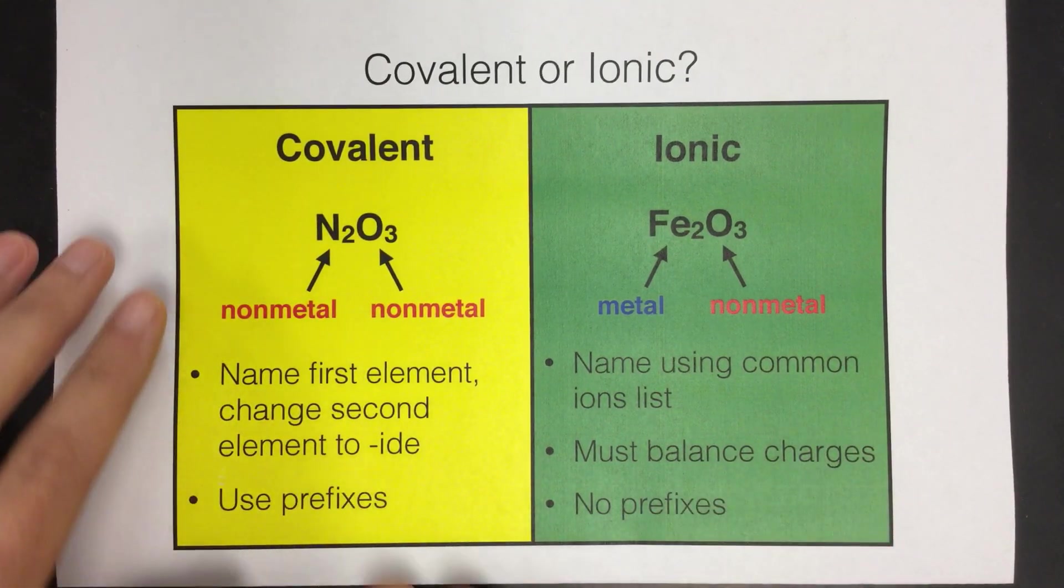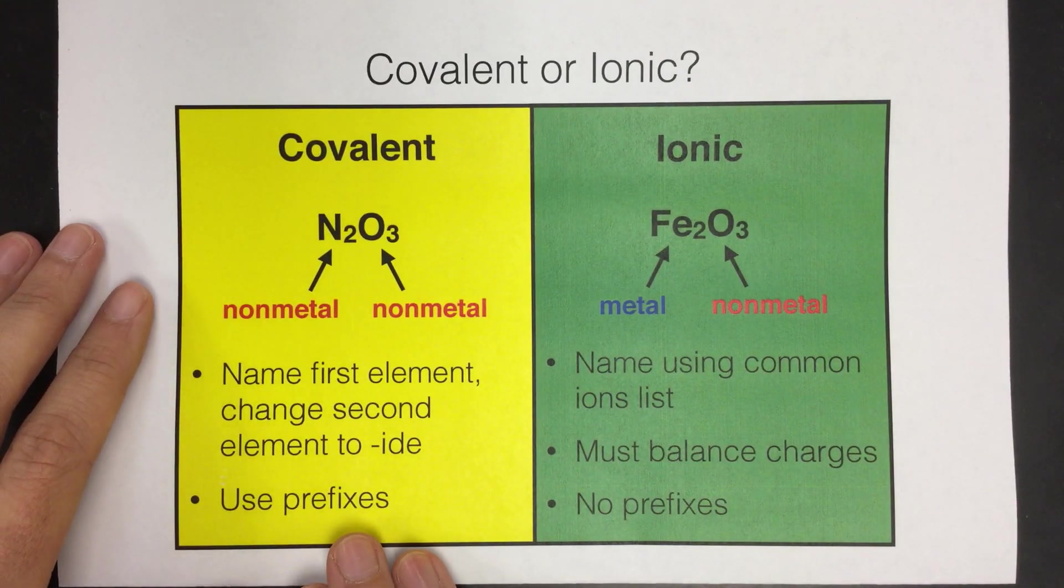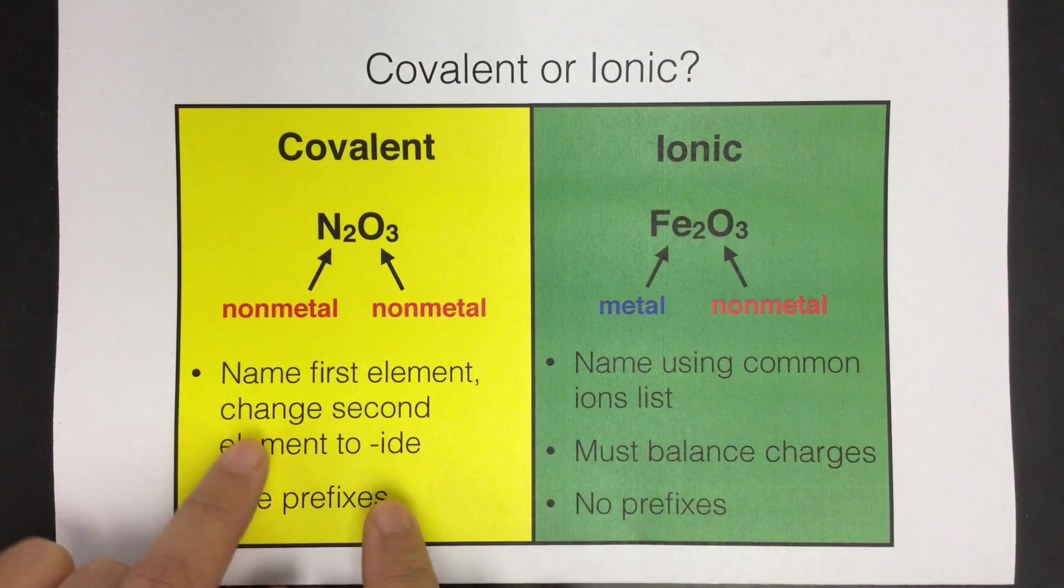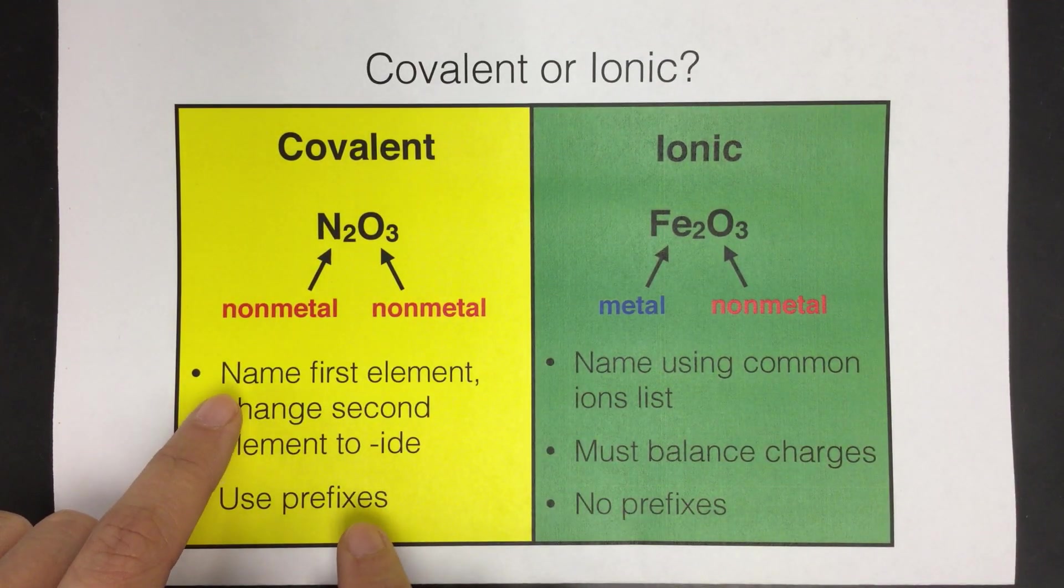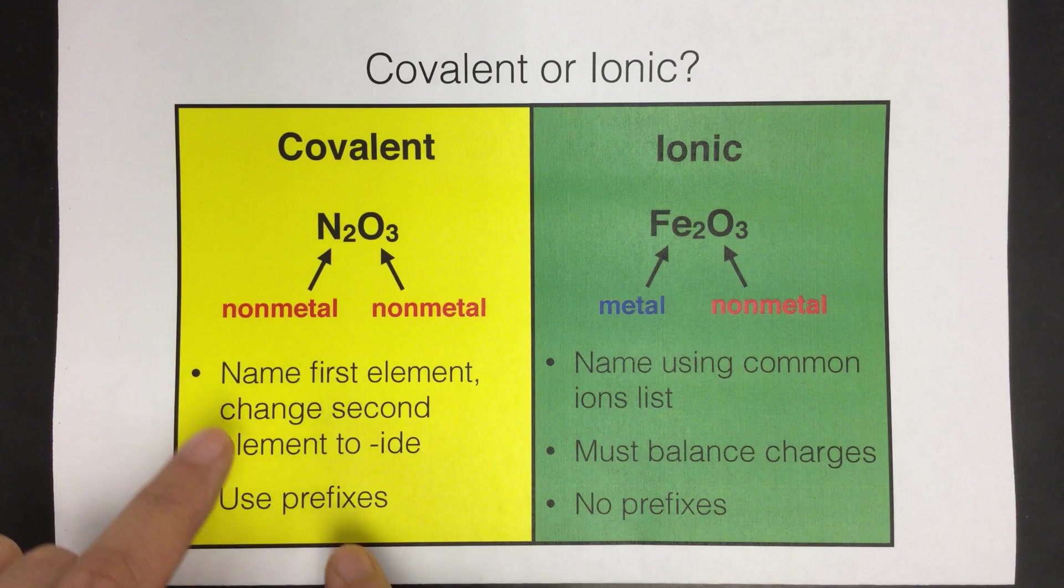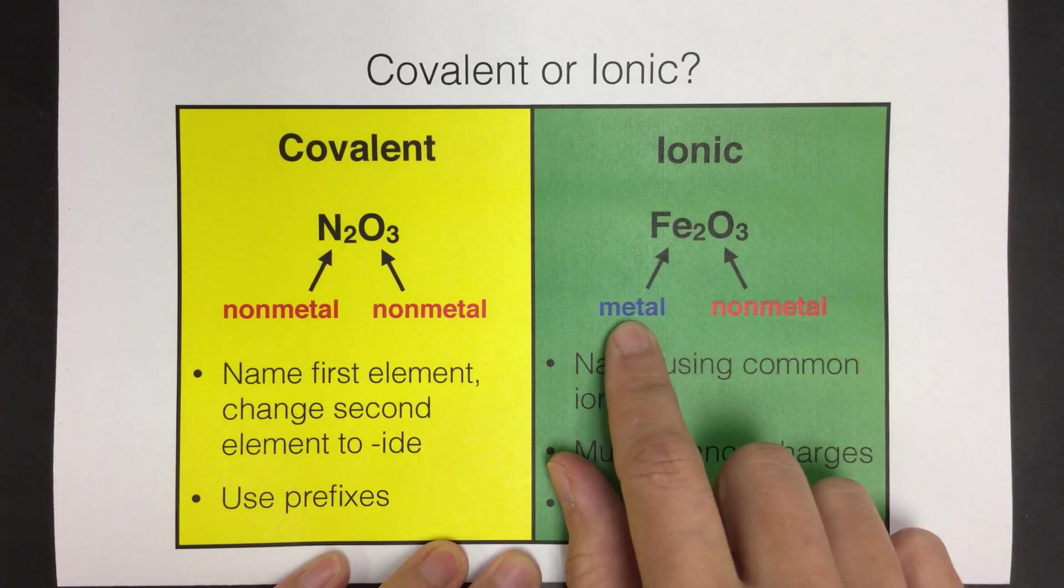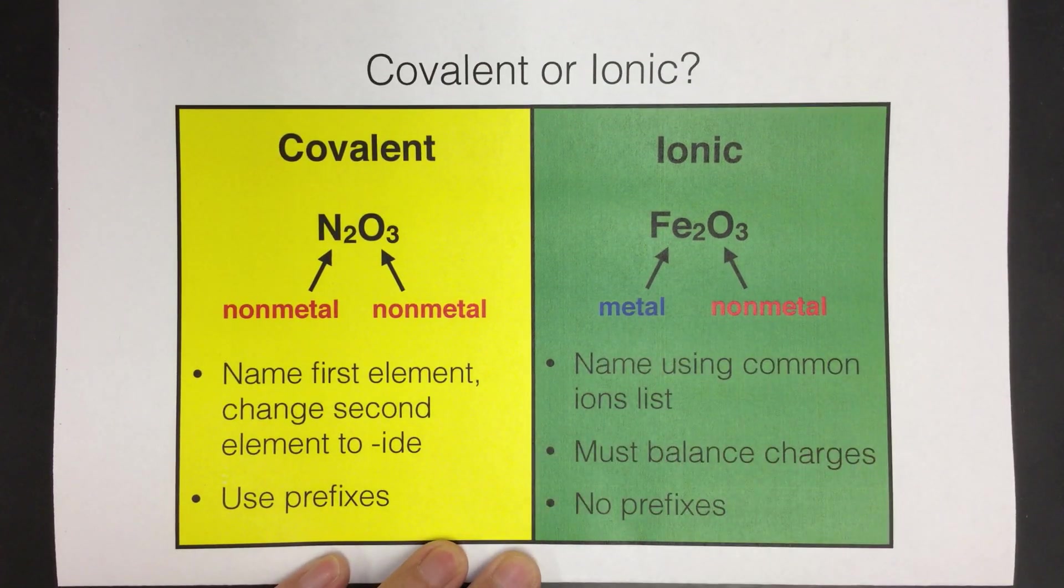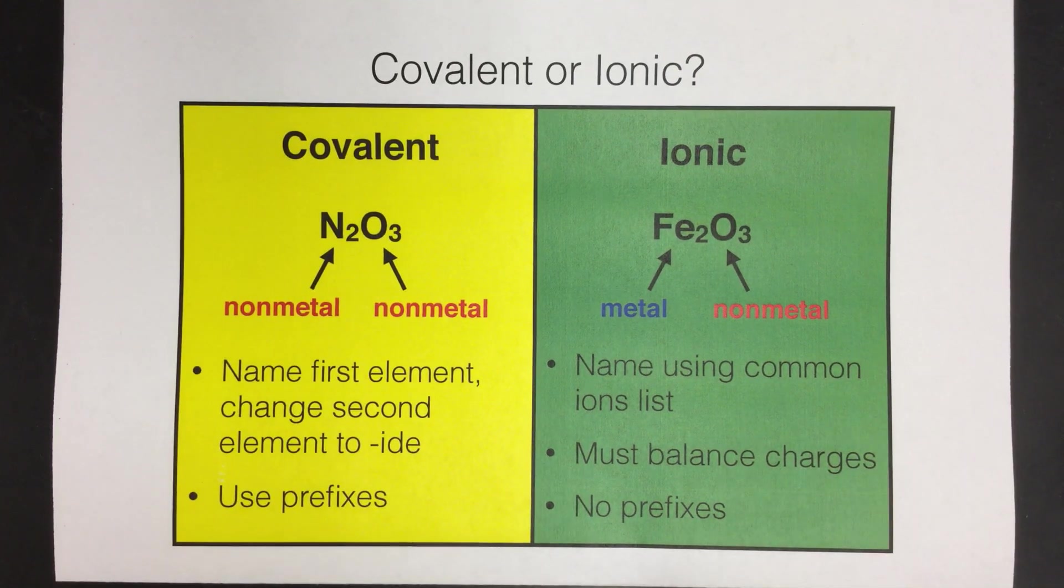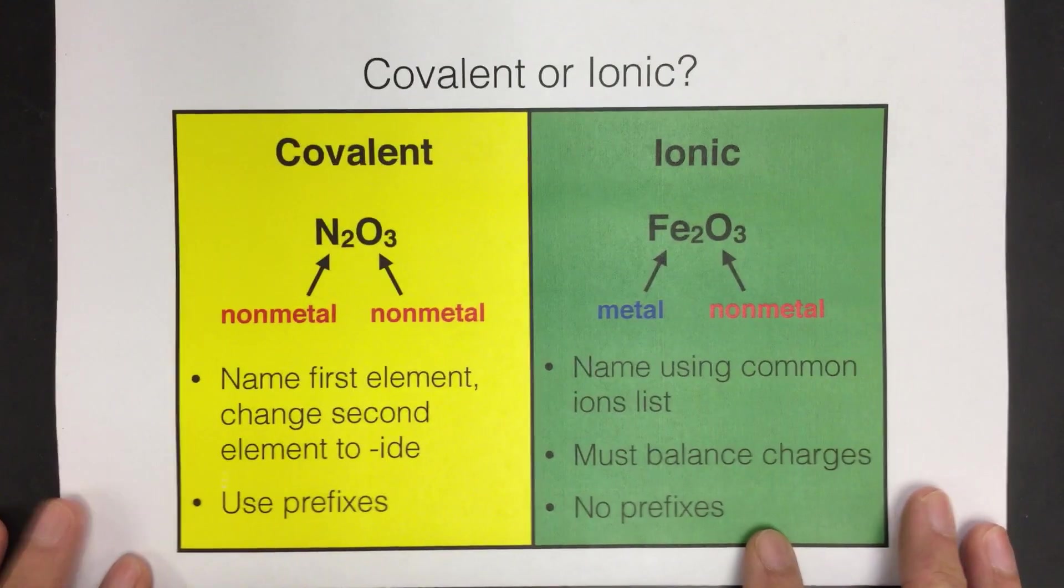So first of all, covalent compounds are when you have two non-metals bonded together, and the way you name it is you put the first element's name, change the second element to -ide, and you use prefixes for those. An ionic compound is different because it has a metal and a non-metal. You name these using your ions list. You have to balance charges. You do not use prefixes for these.